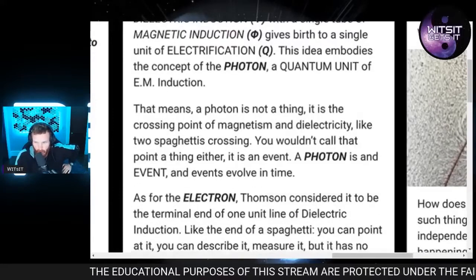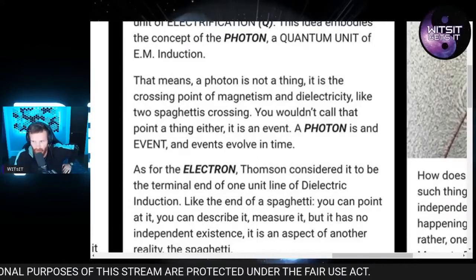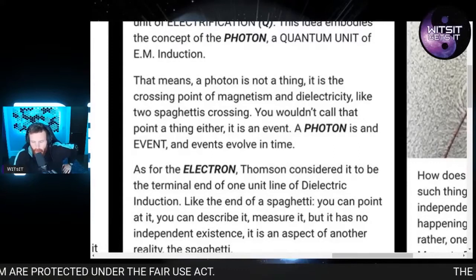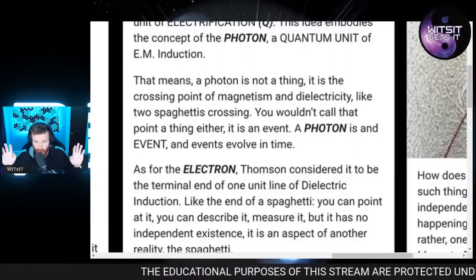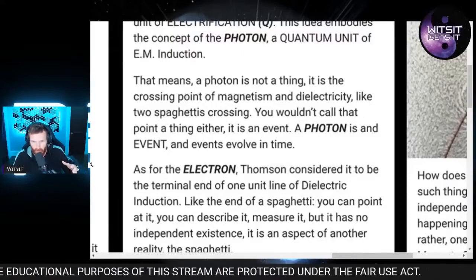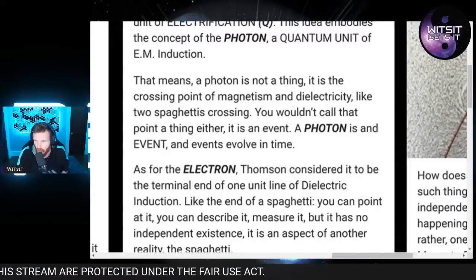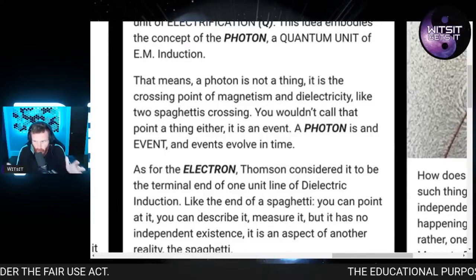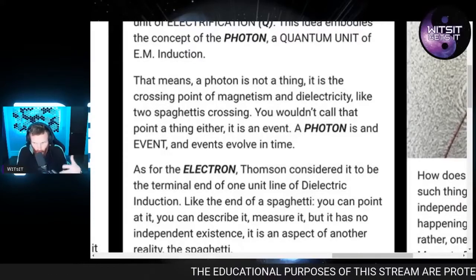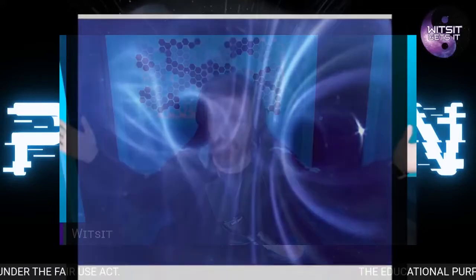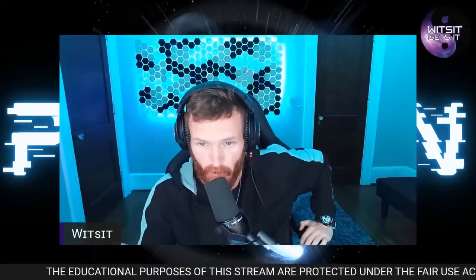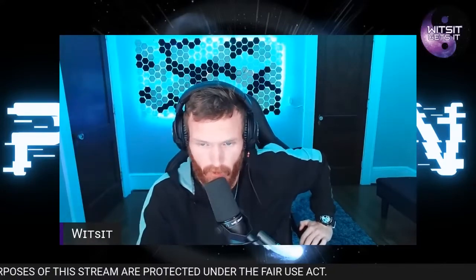This idea embodies the concept of the photon — a quantum unit of electromagnetic induction. They say the photon doesn't have charge — yeah, because the photon isn't there; it's nothing; there's nothing there. But it's always within an electromagnetic field, always within electromagnetic radiation, always within an oscillating electric field and oscillating magnetic field. Mainstream physics will tell you the photon is always within electromagnetic radiation. This means a photon is not a thing; it is a crossing point of magnetism and dielectricity. Virtual particles are not real — they're not the input or output of any experiment; they're just a concept to make our equations balanced. We can't prove them; their existence is questionable at best.